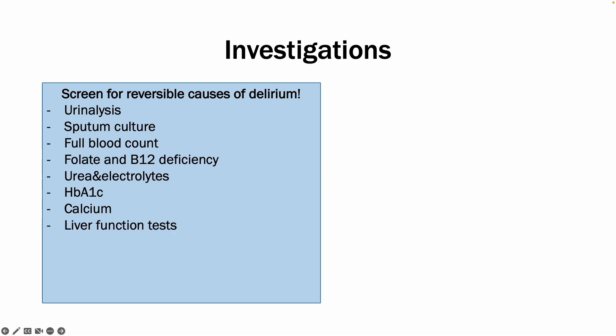Patients who are hypercalcemic can have constipation, which is one of the causes of delirium. Liver function tests to rule out hepatic failure or hepatic encephalopathy. Inflammatory markers can help identify whether there is an underlying infection or inflammation. Thyroid function tests to see whether there is hyper or hypothyroidism. A chest X-ray can help identify things like pneumonia or heart failure. And an ECG, as arrhythmias can also precipitate delirium.